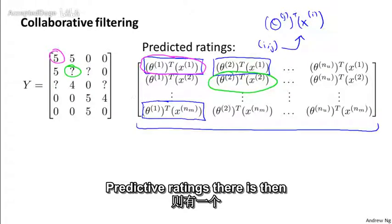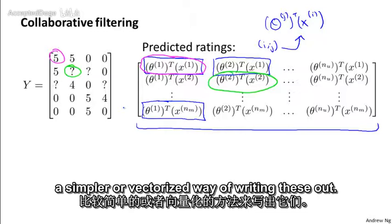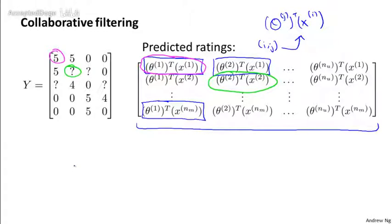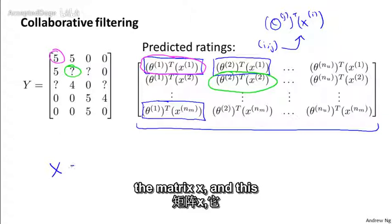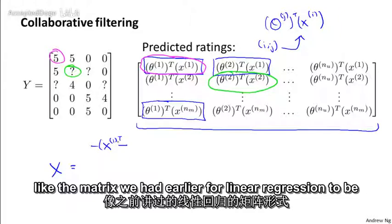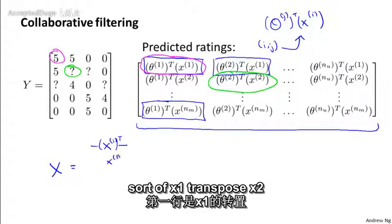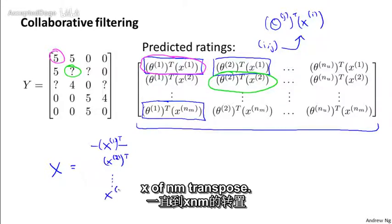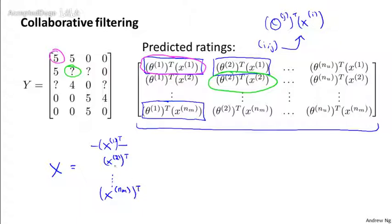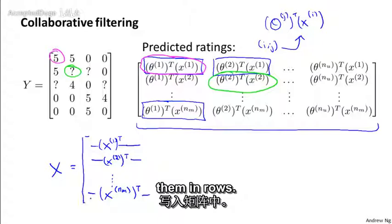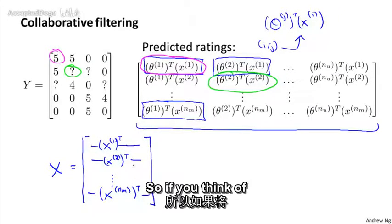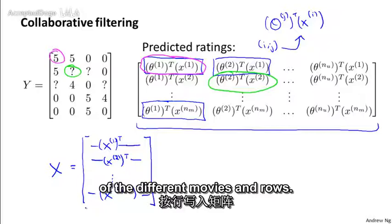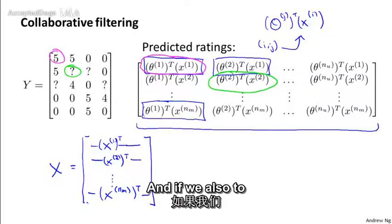Now, given this matrix of predicted ratings, there is then a simpler or vectorized way of writing this out. In particular, if I define the matrix x, and this is going to be just like the matrix we had earlier for linear regression, so x1 transpose x2 transpose down to x of nm transpose. So I'm going to take all the features for my movies and stack them in rows. So if you think of each movie as one example and stack all of the features for the different movies in rows.